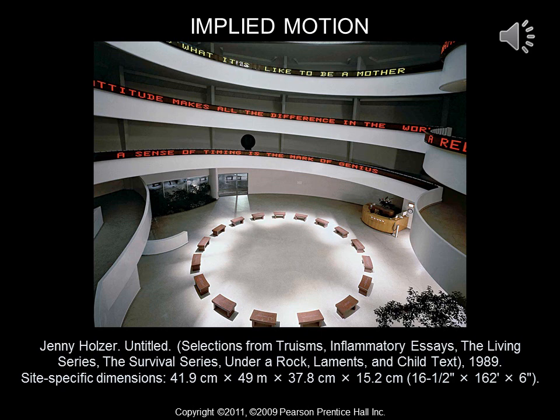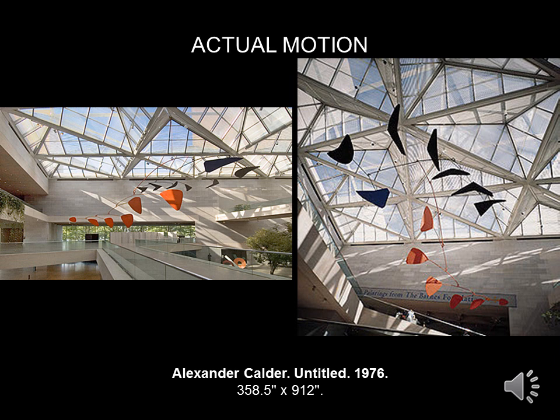We can see implied motion in this work by Jenny Holzer. She took light boards, which you normally see in advertising, and programmed sayings into them. The way the light boards are installed, it gives the impression to the viewer that the phrases are actually moving downwards down the ramp to the bottom of the gallery space. They of course are not moving — the lights are just programmed to come on in different locations — but it does give you the impression that it is moving, which again is implied motion.